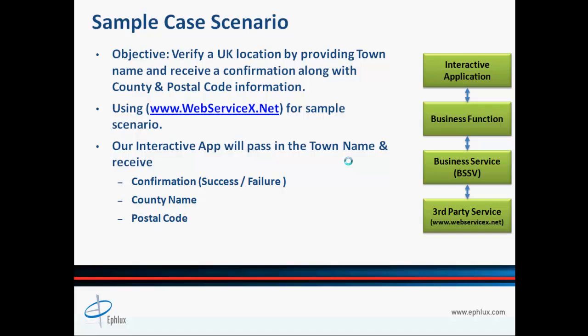Now let's take a look at our sample case that we'll be covering in our hands-on exercise. Our objective is to verify a UK location by providing a town name to an external web service. We need to respond with a confirmation message along with county and postcode information. We will be using www.webservicex.net for this exercise — a very useful website that hosts over 70 web services. Our interactive app will provide the town name as input, and our business service will respond back with a success or failure confirmation message along with the county name and postcode information in case of successful execution.